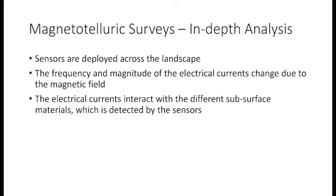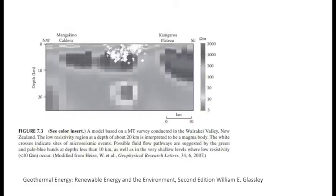Another advantage of MT surveys is that they can be used at very large depths — you can have a geothermal source at 20 kilometers in depth, and the MT survey will be able to give you an image of the features at that depth to allow you to create a map of the geothermal resource in the region. Some other surveys cannot achieve this accuracy or depth. You still need some surface-level readings to know where to drill your hole.